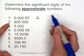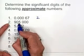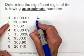Question number two. Again, these are approximate numbers. So we only count these first three digits. So we have three.